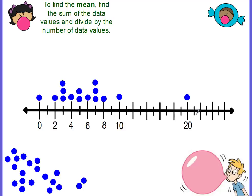How do we add up all these dots? You have to remember that each dot represents the number that's on the number line. So this dot represents a zero, this dot represents a two, this dot represents a three — and since there are three dots, that means there are three threes. We have one dot for the four, so we only need one four. This is a five, and there are two dots, so we would need two fives and so on. You can list them out, then add them up and divide.